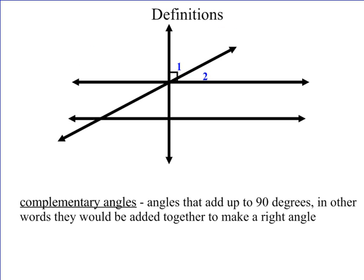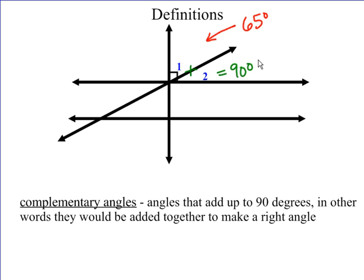Complementary angles are similar, except complementary angles add up to 90 degrees. We can see that little 90-degree angle. If angle one measured 65 degrees, then angle two would measure 25 degrees, because together they would be 90 degrees.